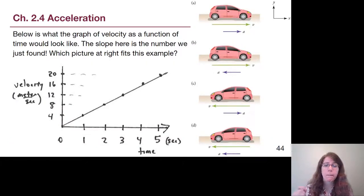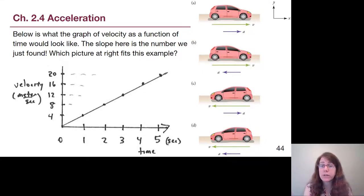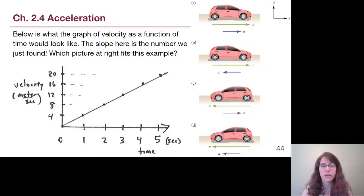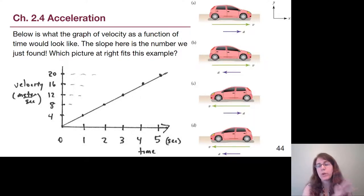Here is what that graph looks like — how velocity changes as a function of time. This is a velocity-time graph, a new graph type we'll spend time with. The slope of a velocity-time graph is the acceleration. Previously, for a position-time graph, the slope gave us velocity. This new graph type — the velocity-time graph — gives us acceleration from its slope. The situation of a car driving in the positive direction and speeding up corresponds to car A.